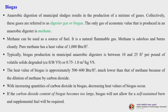Methane can be used as a source of fuel. It is a natural flammable gas — odorless and burns cleanly. Pure methane has a heat value of around 1000 British thermal units per cubic foot. Typically, biogas production in municipal anaerobic digesters is between 10 to 25 cubic feet per pound of volatile solids degraded, or 0.75 to 1 meter cube per kg. The heat value of biogas is approximately 500 to 600 BTU per cubic foot, much lower than methane due to dilution by carbon dioxide.